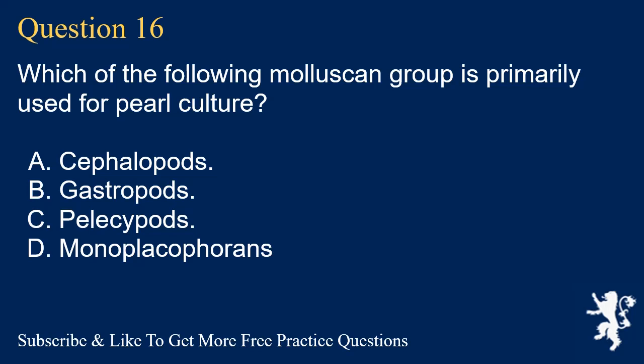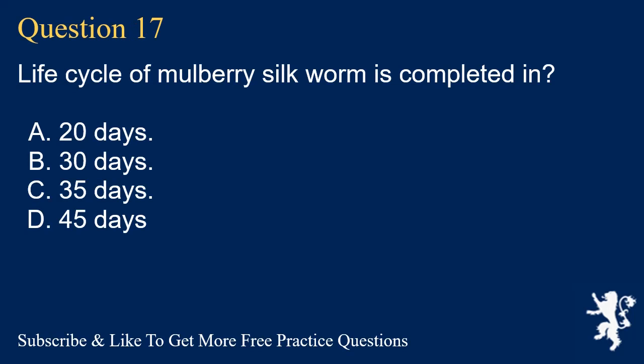Question 16. Which of the following molluscan group is primarily used for pearl culture? A. Cephalopods. B. Gastropods. C. Pelosipods. D. Monoplacopherins. Answer: C. Pelosipods.